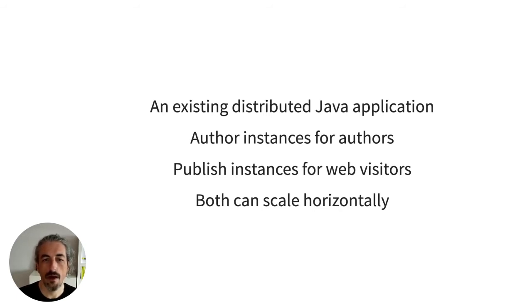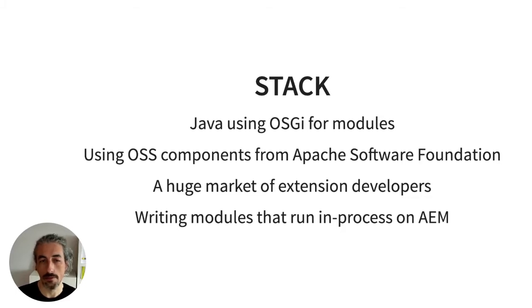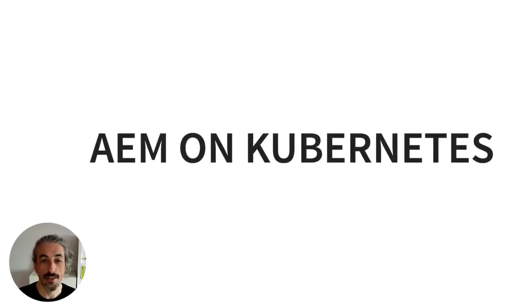It's an existing distributed Java application with author instances where authors create content and publish instances where visitors can see that content — and it can all scale horizontally. This already existed before the move to Kubernetes. The stack uses Java with OSGi and many open source components from the Apache Software Foundation. There's also a huge market for extension developers who write modules that run in-process on AEM.